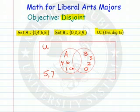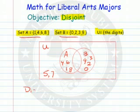Eight is in A, but not B. Nine is in B, but not A. These two sets, A and B, are said to be disjoint.